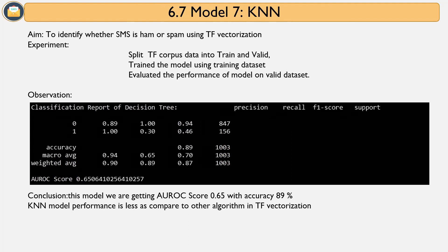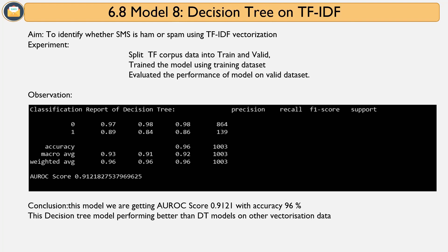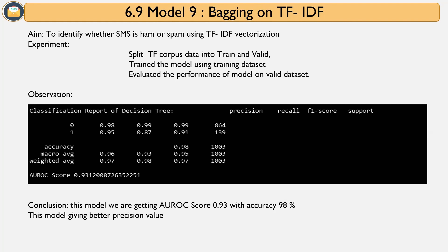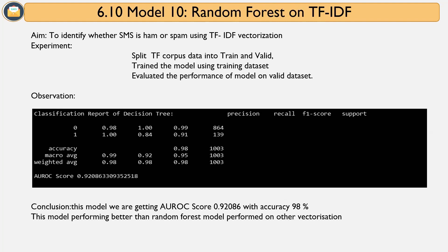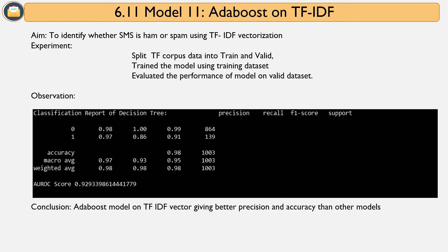KNN on TF achieved accuracy of 89% and AU-ROC of 0.65. Decision tree on TF achieved accuracy of 96% and AU-ROC of 0.91. Bagging on TF-IDF achieved accuracy of 98% and AU-ROC of 0.93. SVM on TF-IDF achieved accuracy of 98% and AU-ROC of 0.92.